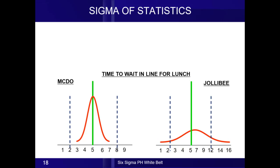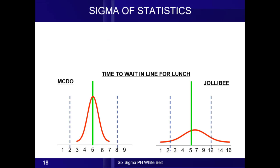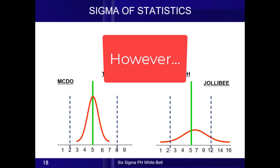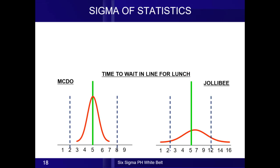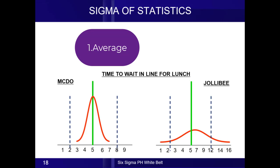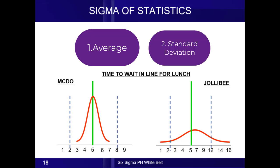Now the question is, since you are in a hurry, between McDonald's and Jollibee, where will you go? The answer is it doesn't matter — because if your reference point is the average, both McDonald's and Jollibee's average would take you five minutes. Most managers only use average in comparing processes. But if you have been trained in Six Sigma, you'll have two very important process measurements: number one is the average, and the second one is standard deviation.